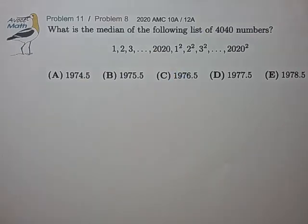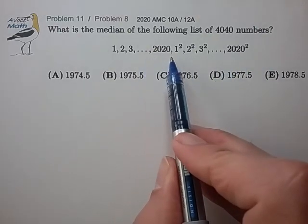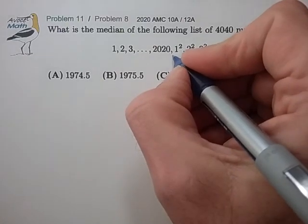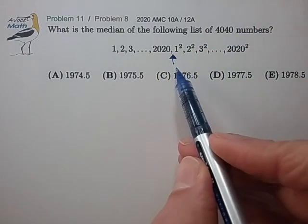Okay, this is the kind of problem I'm likely to make a mistake on, so I have to think carefully about this one. So imagine that all the squares are above 2020. Then the median would lie somewhere at this point in the list. But that's not the case.